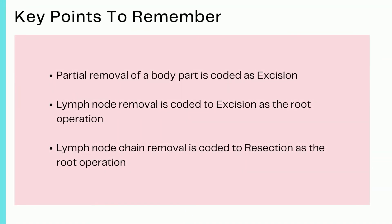The key points to remember are: partial removal of a body part is coded as excision as the root operation, and complete removal of a body part is coded as resection as the root operation. Additionally, lymph nodes removed as individual nodes are coded as excision.